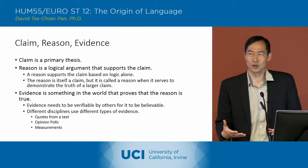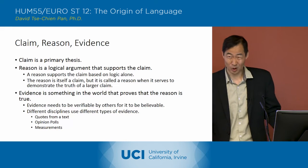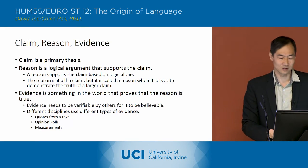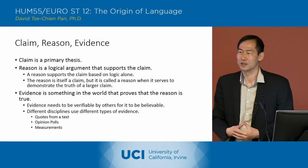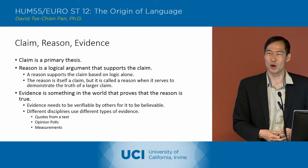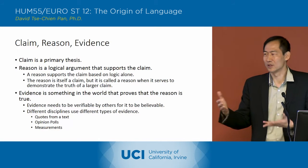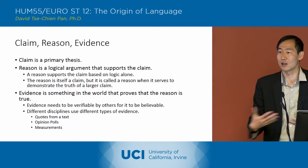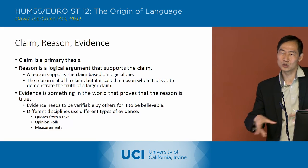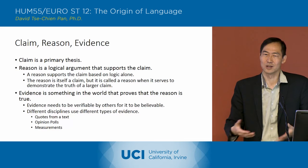The type of evidence you're using will be different depending upon the methodology you're using. Different disciplines are going to be using different kinds of evidence. In the humanities, we're often using quotes from texts as evidence — you've got a text and you're pointing to those words. In the social sciences, you might be looking at opinion polls. In the natural sciences, often it's measurements — temperature, pressure, or something like that. But in any case, the evidence is something you're going to be pointing to, so that distinguishes it from the reason, because the reason is not something out in the world — it's a logical argument.